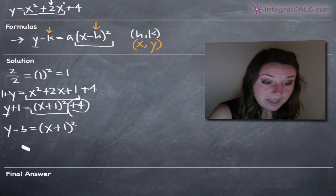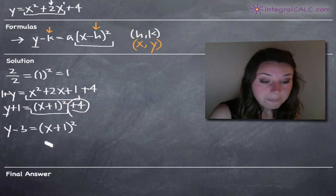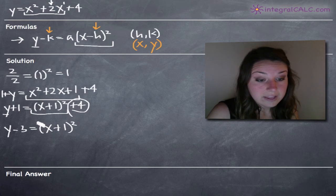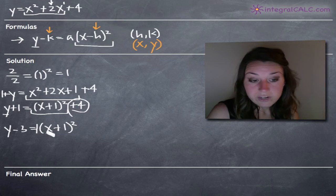Now our equation is in the exact same format as our formula. You see we've got y minus k, y minus three, equals a times x minus h squared. In our case, a is just one. We've got a coefficient of one there that we don't see because we don't need to write it.